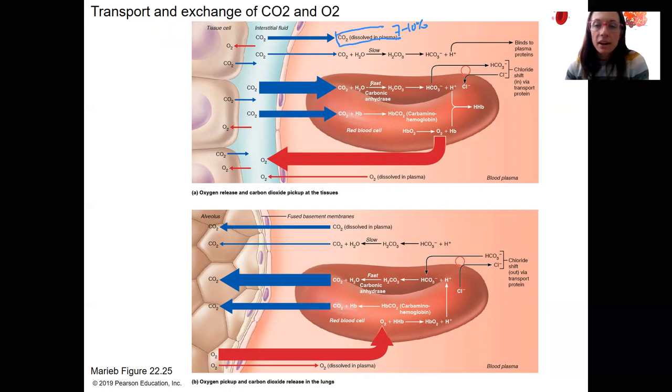Then we've got carbonic anhydrase. I don't need you to know the difference between the slow and fast. There's two different locations for that enzyme. That's what is happening here. These are the same. In either way,